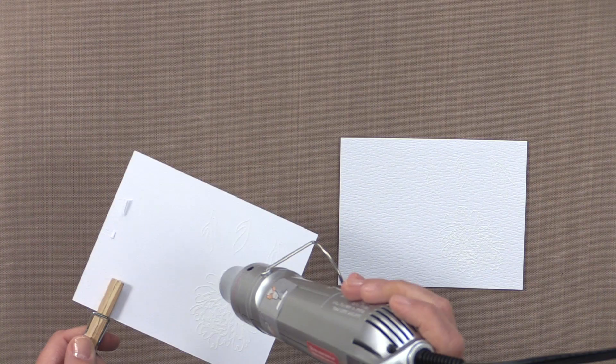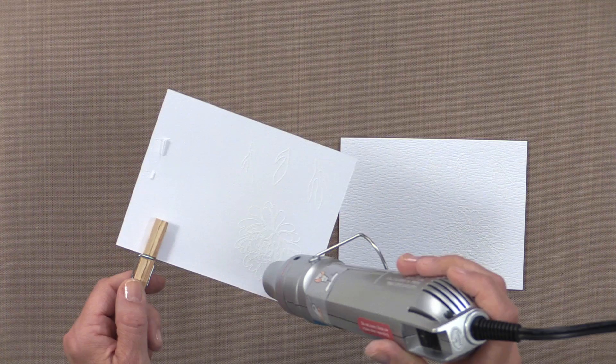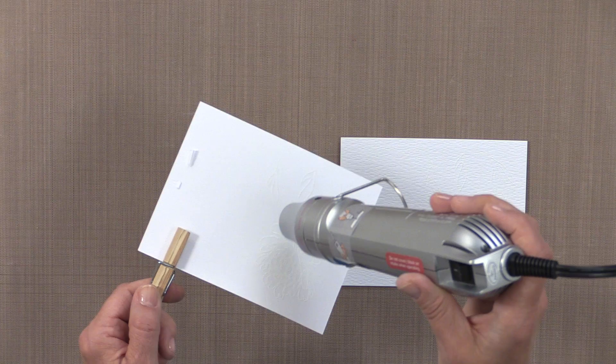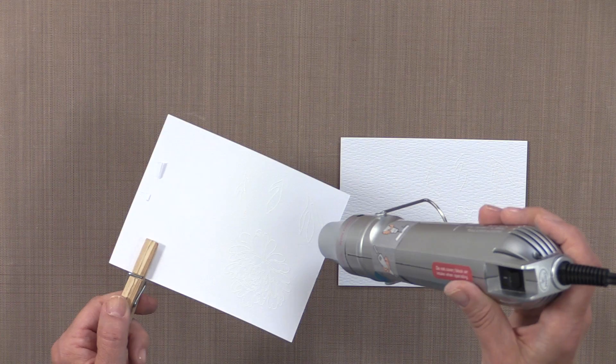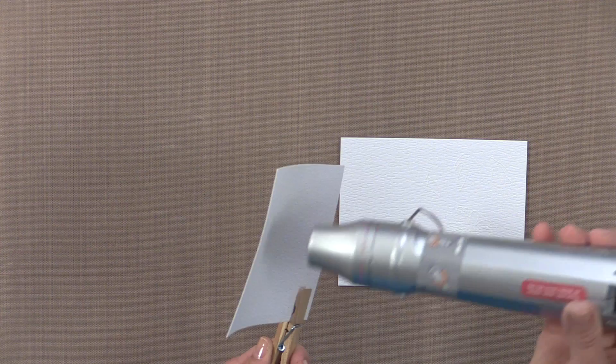Now I'm using a clothespin to hold onto my piece of cardstock so I don't burn my fingers, and I've let the heat tool heat up for just a few minutes prior to actually embossing the images. That will prevent some of the warping that you can get from heat embossing. However, if you do get warped cardstock, you can always heat it a little bit from the backside of the cardstock, and that helps to flatten it out a little bit.